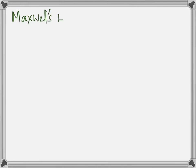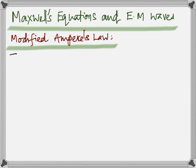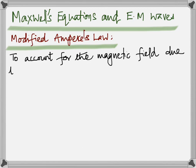Welcome to Maxwell's electromagnetic theory, based on four equations called Maxwell's equations. The first thing he did was modify Ampere's law. Ampere's law states that the closed line integral of B dot dl equals μ₀ times the current enclosed by the path. This is the only change Maxwell made — to account for the magnetic field due to a charging or discharging capacitor.